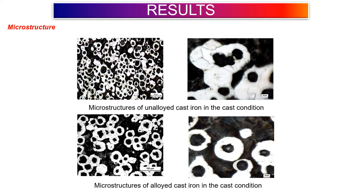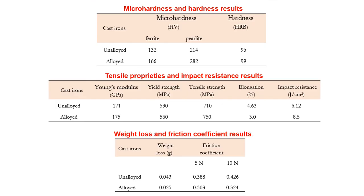Metallography shows that the sample structures are pearlitic. The alloyed cast iron has an important proportion of pearlite. The results of microhardness, hardness, tensile properties, and impact resistance all increase for alloyed cast iron compared with the un-alloyed cast iron.